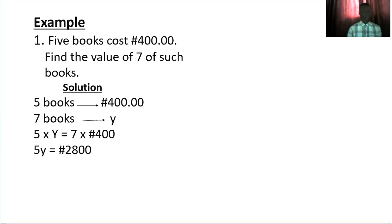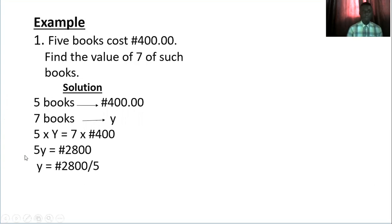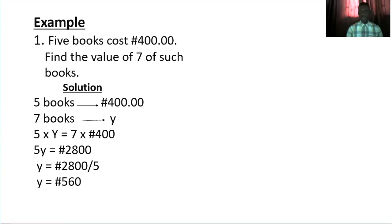So we have 5y equals two thousand eight hundred. To find y, we divide both sides by five: y equals two thousand eight hundred divided by five, which gives y equals five hundred and sixty naira. That is one way to solve it. There is another way — the formula method.